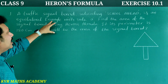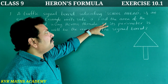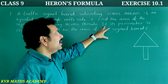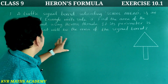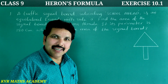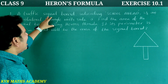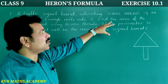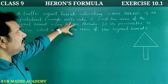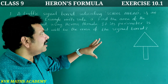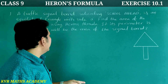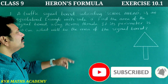First question: A traffic signal board indicating 'School Ahead' is an equilateral triangle with side A. Find the area of the signal board using Heron's formula if its perimeter is 180 centimeters. What will be the area of the signal board?